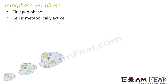In the G1 phase, the cell is metabolically active. When I say metabolically active, I mean the cell is active to carry out metabolism — all the life processes taking place inside our body. This includes all the different types of chemical reactions taking place for respiration, digestion, and excretion. All these things together which help in sustaining life is known as metabolism. So in this stage, the cell is metabolically active and continues to grow.